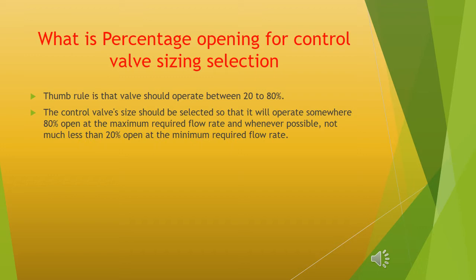What is the percentage opening for control valve sizing selection? The thumb rule is that a valve should operate between 20 to 80%. The control valve size should be selected so that it operates at approximately 80% open at the maximum required flow rate, and not much less than 20% open at the minimum required flow rate.